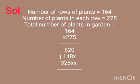Solution. Number of rows of plants is equal to 164. Number of plants in each row is equal to 275. Total number of plants in the garden — so we will multiply 164 and 275.